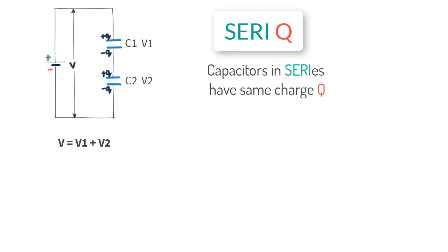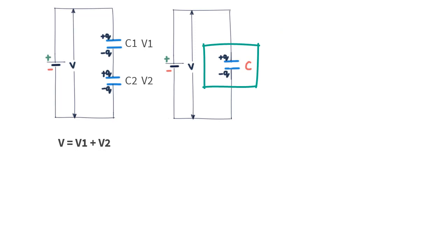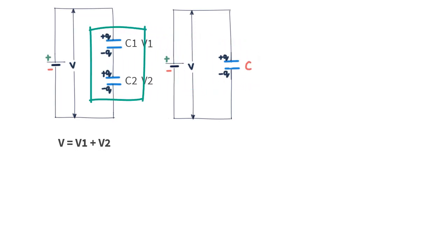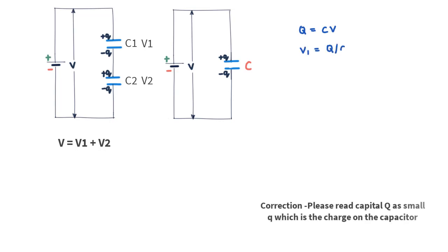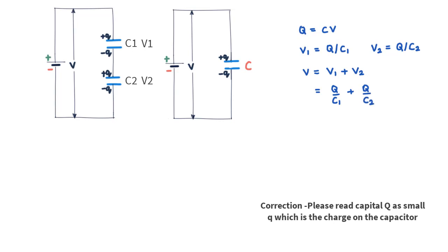The question now is what is the equivalent value of a single capacitor that can replace this set of two capacitors? Applying Q = CV for capacitor 1, we can say V1 = Q/C1, and for capacitor 2 we write V2 = Q/C2. We also know that the potential difference across the battery is the sum of potential differences across each capacitor, so V = V1 + V2, which equals Q/C1 + Q/C2, or pulling Q out: Q times (1/C1 + 1/C2).